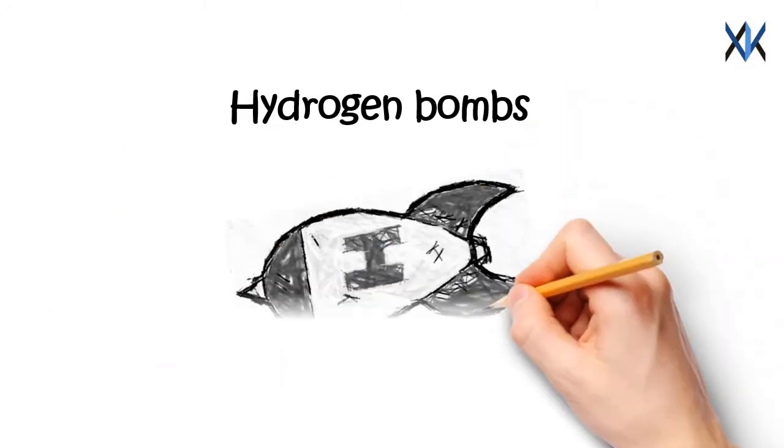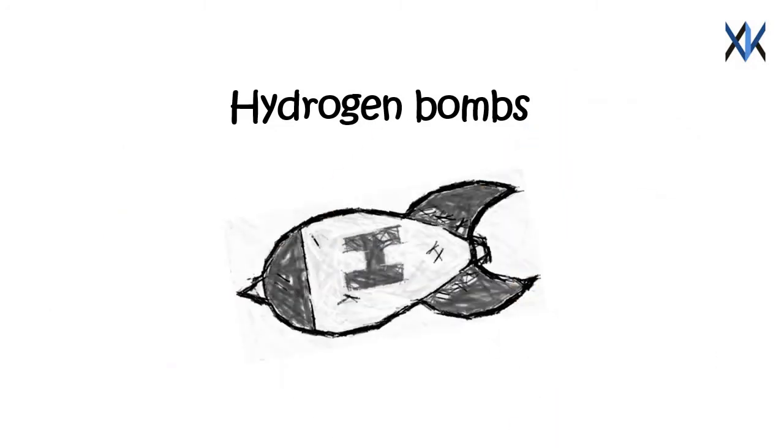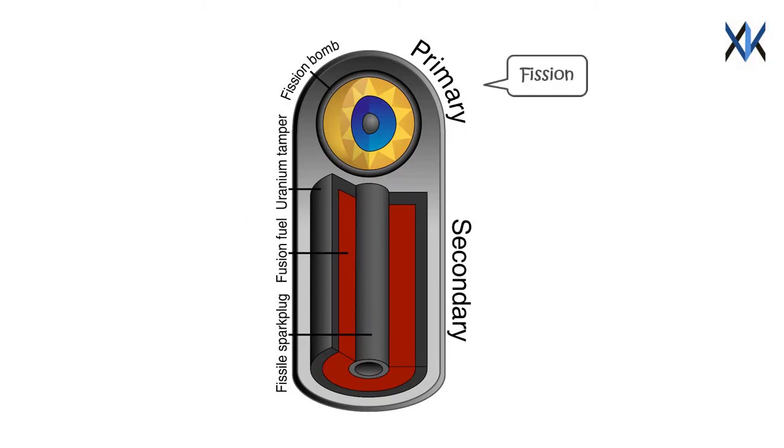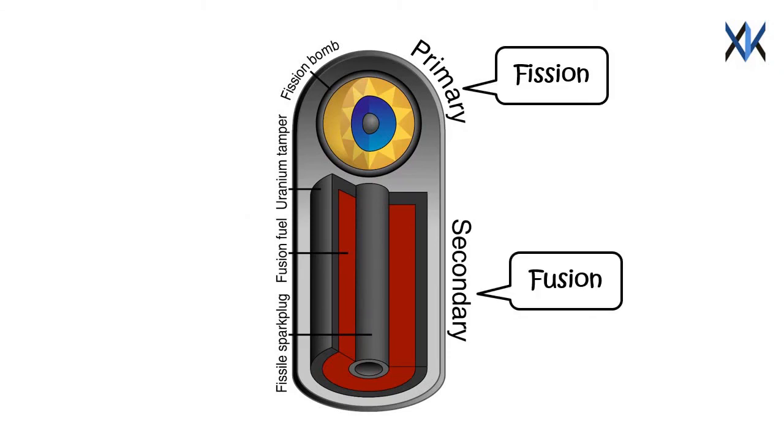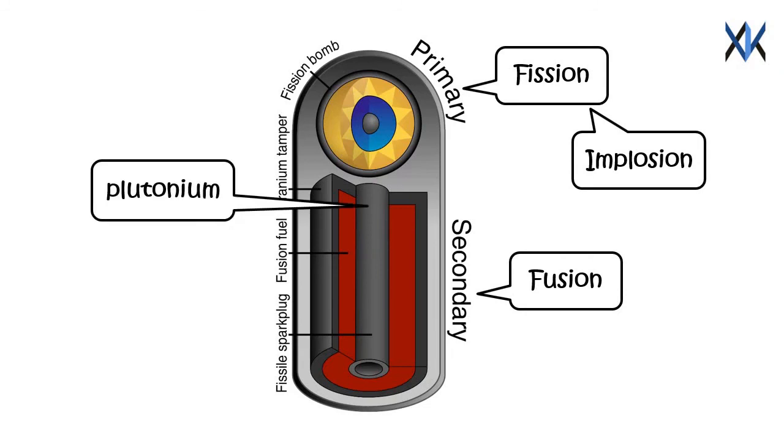Thermonuclear bombs consist of two parts, namely primary and secondary. The primary part is focused on fission, and secondary part on fusion. Primary part consists of an implosion type fission bomb. Secondary part is shaped much like a tube, with a plutonium rod at its center covered by lithium deuteride enclosed in a uranium casing.